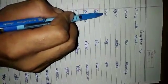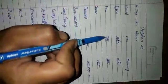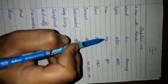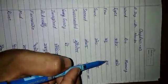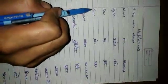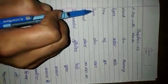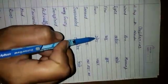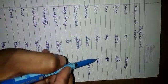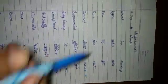F, E, W — Few. Few means Coach. S, U, R, E — Sure. Sure means Jaroor.